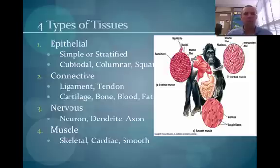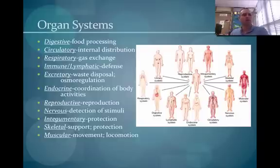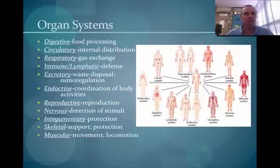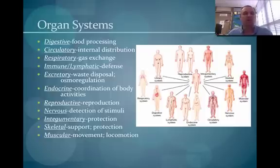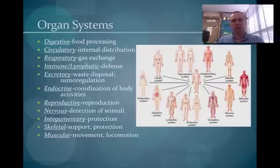When these tissues work together to make organs and organ systems, here are the major systems in the body: the digestive system processes food; the circulatory system manages blood flow; the respiratory system exchanges gases; the immune and lymphatic system provides defense; the excretory system eliminates waste; the endocrine system coordinates the body using hormones; the reproductive system is for reproduction; the nervous system detects stimuli and coordinates responses; the integumentary system — our skin — provides protection; the skeletal system provides support; and the muscular system enables movement and locomotion. I hope this gives you a brief overview of form and function and how our body is organized — have a wonderful day!